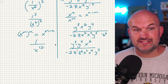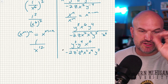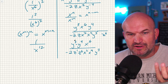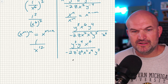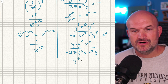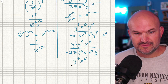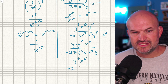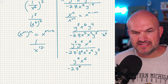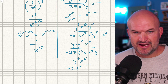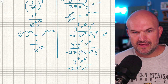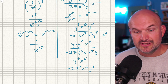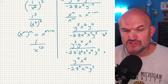Now let's combine things using the product rule. Remember, when multiplying with the same base, you add the powers. So up in the numerator, I'm going to have y to the seventh power and x to the sixth. In the denominator, one plus six is seven, so z to the seventh power, x to the eleventh, and y to the third power.